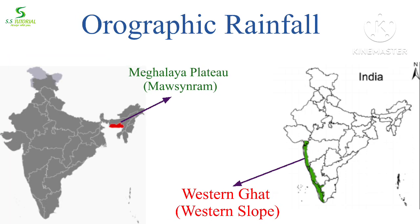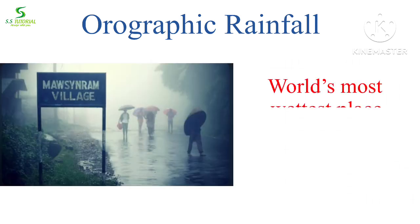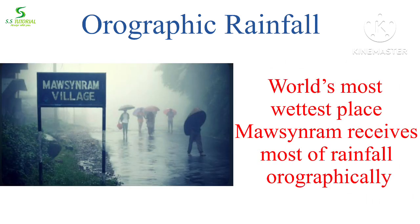Meghalaya Plateau and Western Ghats are the most notable examples where orographic rainfall occurs. The world's wettest place, Mawsynram in Meghalaya, receives most of its rainfall orographically.